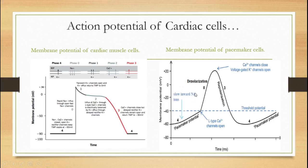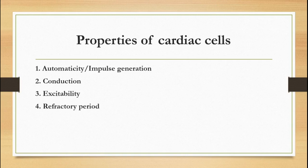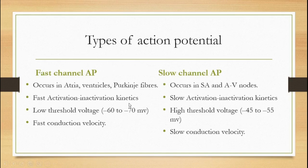This difference between the action potential of a contractile cell and a pacemaker cell is very important for understanding anti-arrhythmic drugs, which we will discuss later. The properties of cardiac cells include: automaticity — they can generate the impulse of their own; conduction — they can conduct the electrical impulse from one cell to another; excitability — the strength required to excite a cell, which depends upon the threshold potential; and the refractory period — the time between two action potentials. There are two types of action potentials in cardiac cells: fast channel action potential and slow channel action potential.